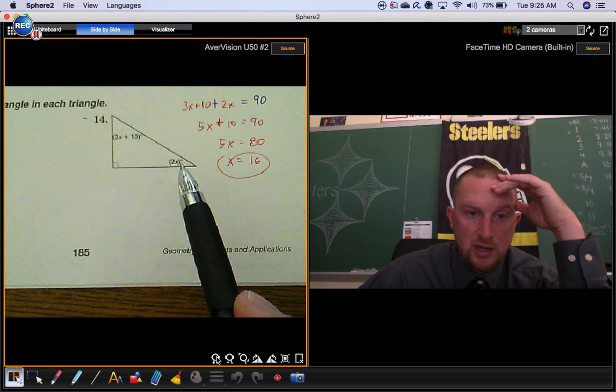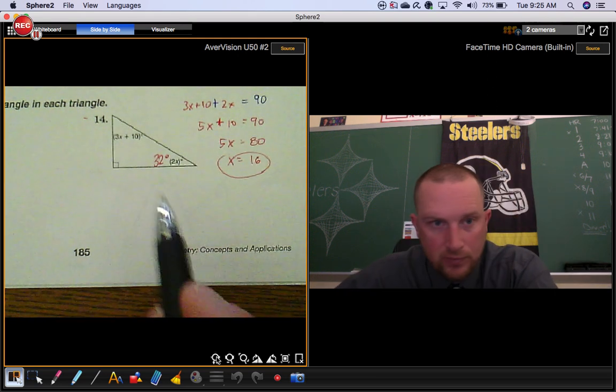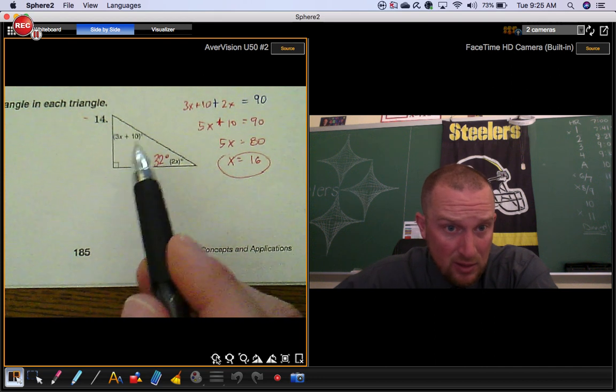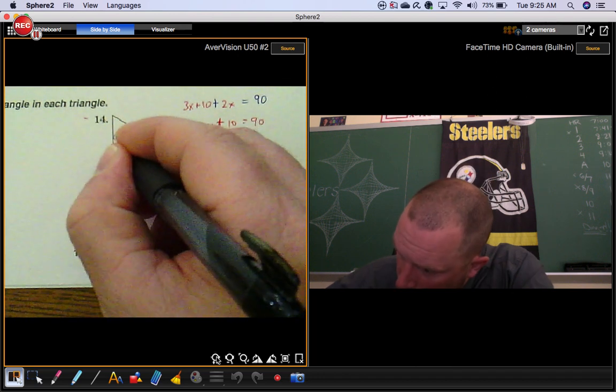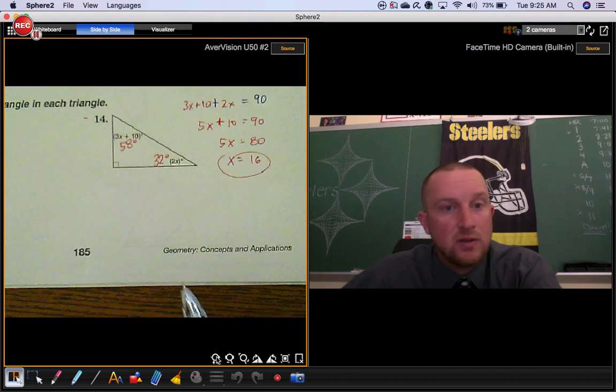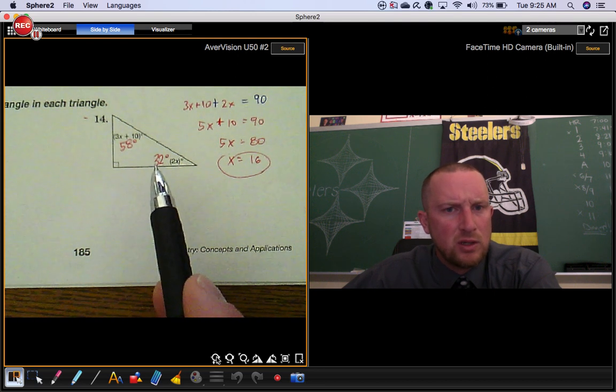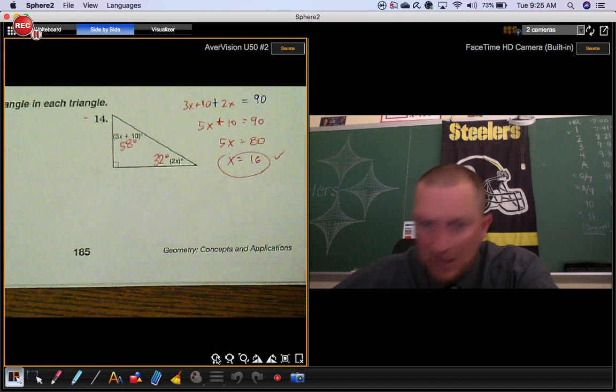So 2 times x. That's 2 times 16. That gives you 32. 3 times 16 plus 10. That's 48 plus 10. 58. How do you know that you're right? 58 plus 32 equals that number you wanted from the beginning. That's how you know you're right.